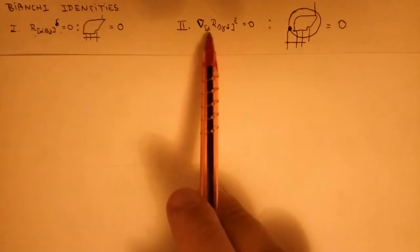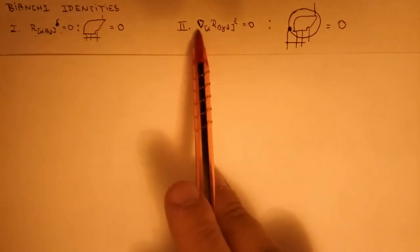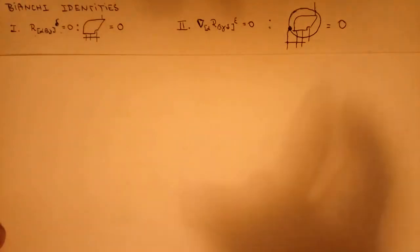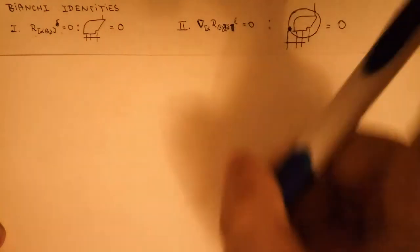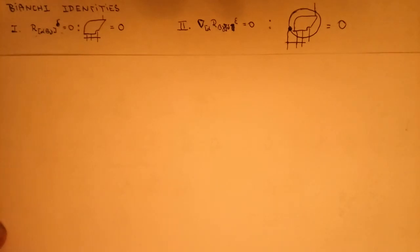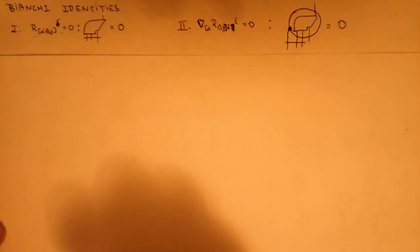And the second one — if you do the same thing, anti-symmetrization, this anti-symmetrization is only in three indices, so there should be this bracket and not this bracket. With a covariant derivative you will get exactly also zero.